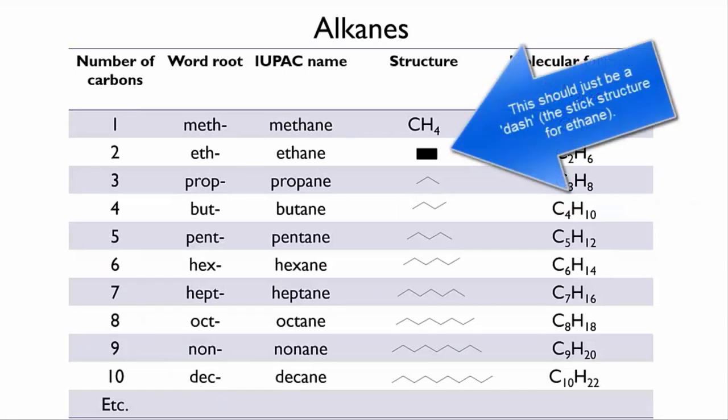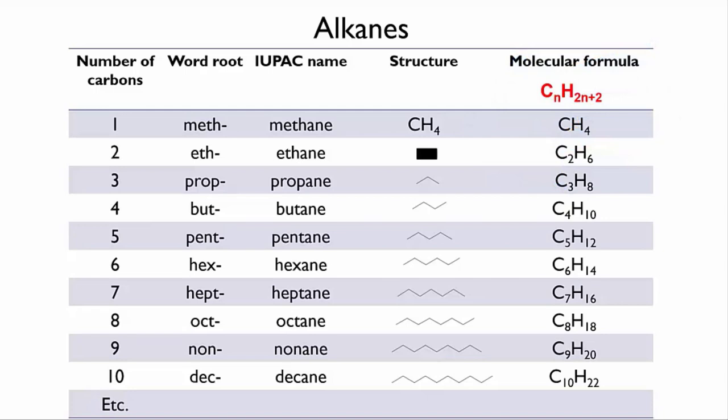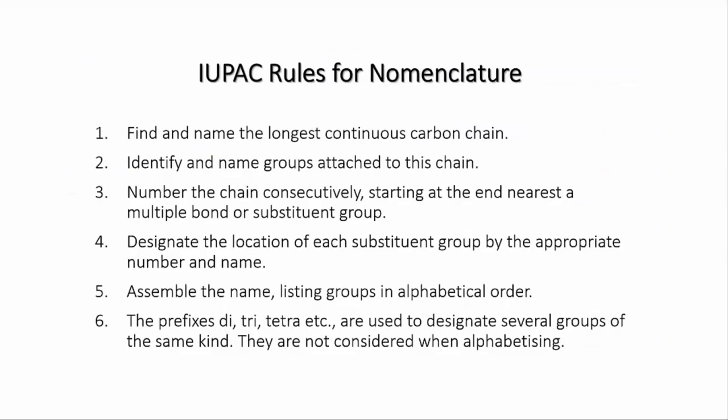So I've just quickly stuck this slide in here to revise the names of the alkanes, in particular those word roots that tell you how many carbons are there. You should know these off by heart by now. So in order to help with nomenclature, the International Union of Pure and Applied Chemists has come up with a list of rules and I've summarized the basic ones here and we're going to work through them.